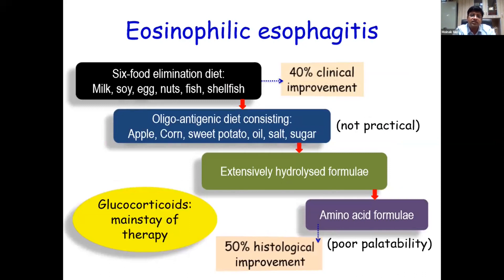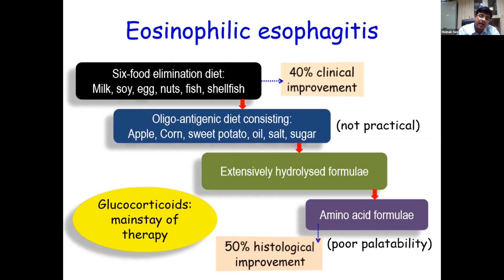Eosinophilic esophagitis is one condition where a six-food elimination diet of milk, soy, eggs, nuts, and fish gives 40% clinical improvement. Then an oligoantigenic diet is tried, though not practical in children. Afterwards, they move to extensively hydrolyzed formula, and lastly an amino acid formulation, which can give 50% histological improvement. However, diet is not the only treatment — the majority of patients will require pharmacotherapy in the form of steroids.